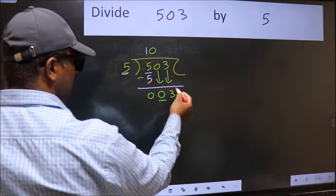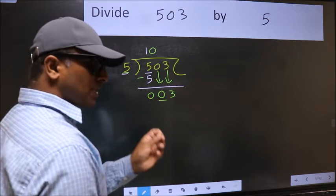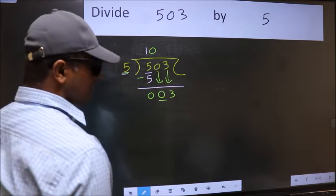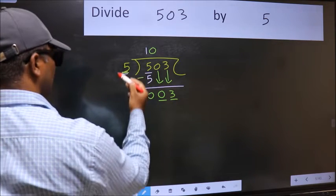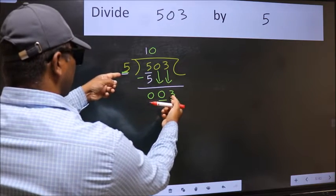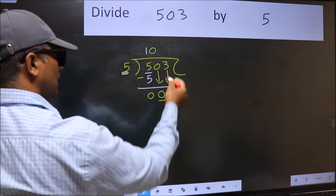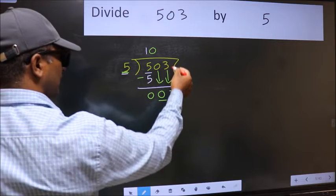After this step, the mistake happens. And the mistake is this. Here we have 3. And here 5. 3 is smaller than 5.